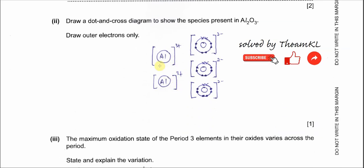Part 2: draw a dot-cross diagram to show the species present in aluminum oxide. First you need to know that aluminum oxide is an ionic compound, so the electrons from the aluminum will be donated to the oxygen. Aluminum will form the cation and the oxygens will form the oxide anion.